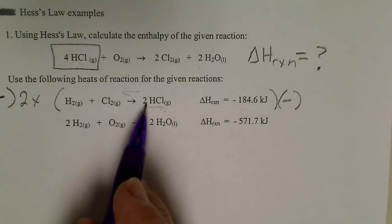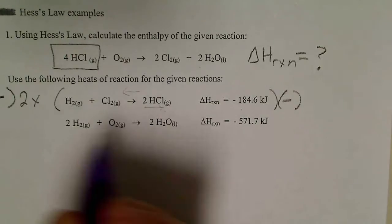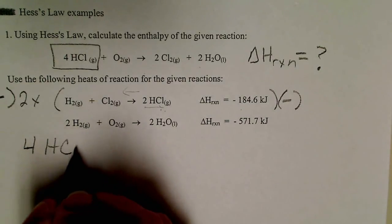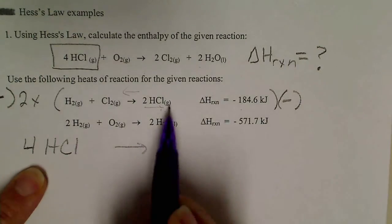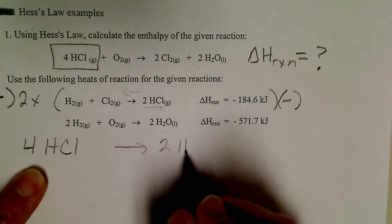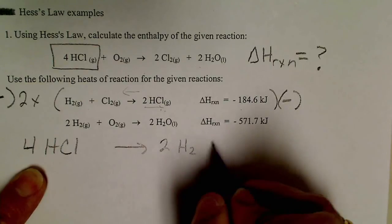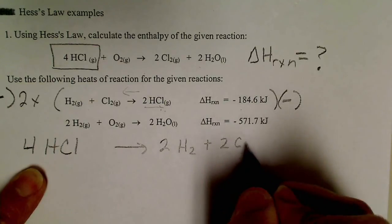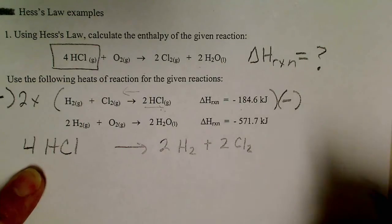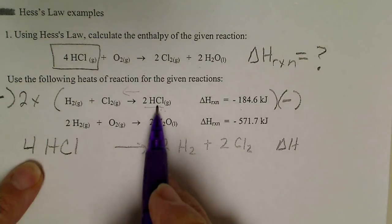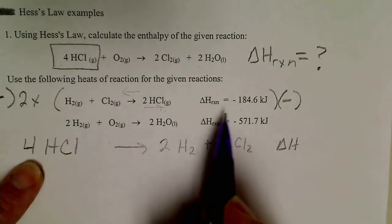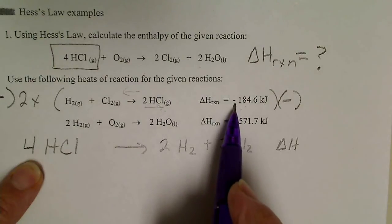So I'm going to take this two and multiply it by two, and that's going to give me four HCls on the left. I'm going to keep my arrows lined up, and then that's going to give me two hydrogen molecules and two chloride molecules on the right, two chlorines. And since I doubled this recipe and I reversed the order, I'm going to double this value and change the sign.